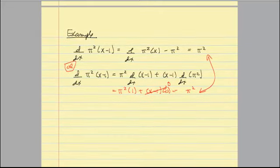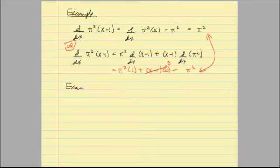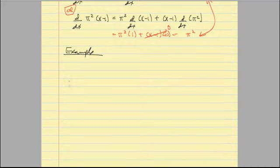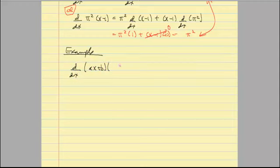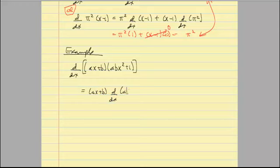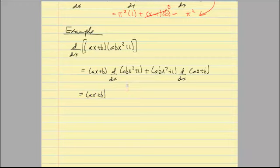A lot of times you can rewrite into a simpler form before using the product or quotient rule. Let's look at another example: the derivative with respect to X of (AX plus B) times (ABX squared plus 1). We have a lot of values here — what's constant and what is variable? Only X is the variable; everything else is treated as constant. Using the product rule: first function times the derivative of the second, plus the second function times the derivative of the first.